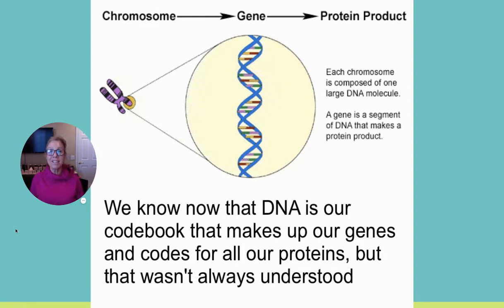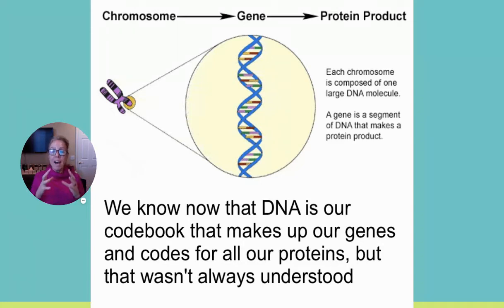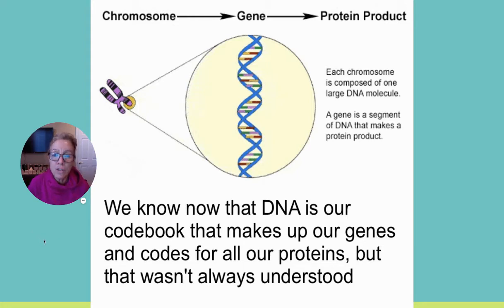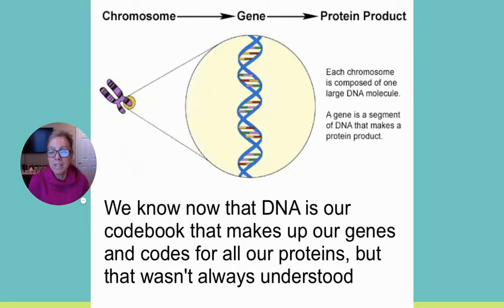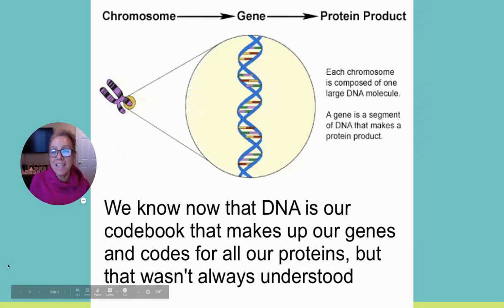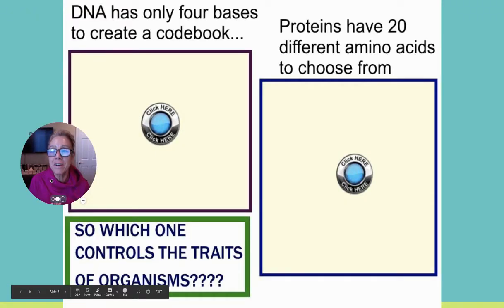Let's remind ourselves about chromosomes. In a eukaryotic cell those would be linear chromosomes, located inside the nucleus. On those chromosomes there are genes, and those genes code for proteins. So we have this codebook, and the way that codebook speaks is primarily through its proteins. Understanding that DNA is that codebook was a pretty big deal historically.